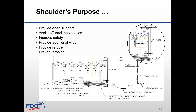Shoulders provide edge support of the mainline pavement. They assist with off-tracking vehicles, improve safety, provide additional width for lane shift during rehabilitation, provide refuge for disabled vehicles, and prevent erosion from pavement runoff.